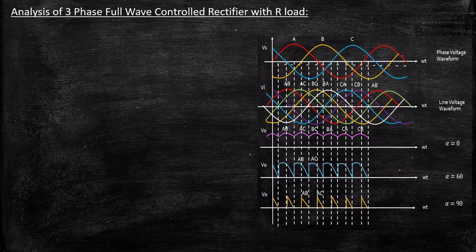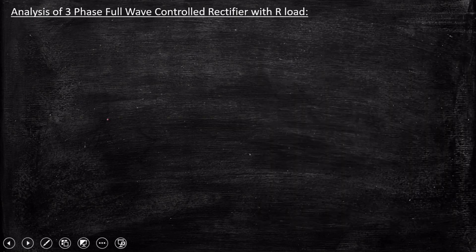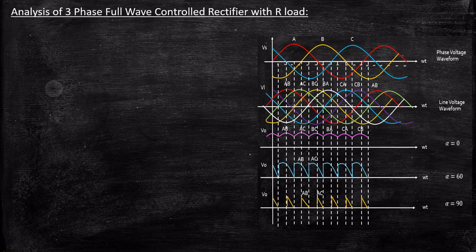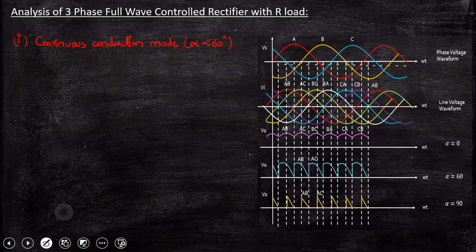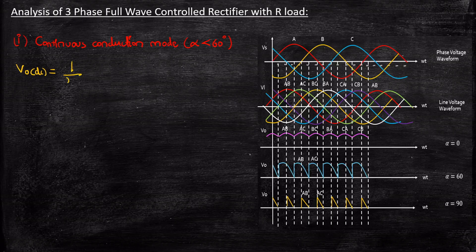For continuous conduction mode, that is alpha less than 60 degrees, we will start our analysis. We will be writing the expression: V_out_DC is nothing but the total time period here, which is 1 over (pi/3).